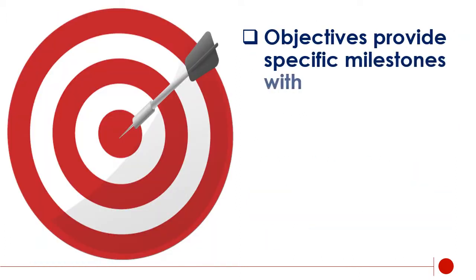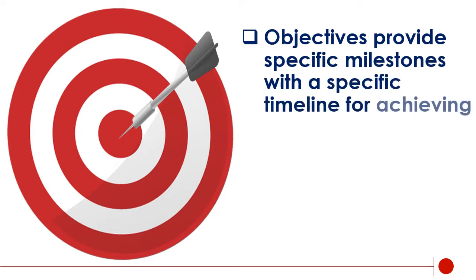Objectives provide specific milestones with a specific timeline for achieving a goal. An objective turns a goal's general statement of what is to be accomplished into a specific, quantifiable, time-sensitive statement of what is going to be achieved and when it will be achieved.